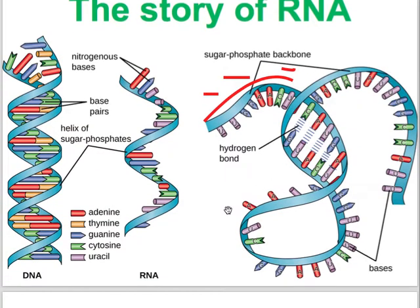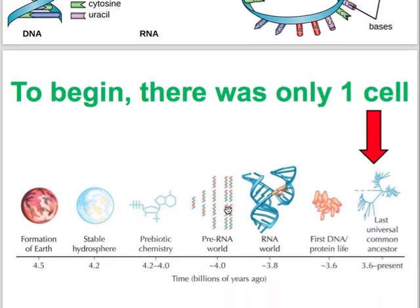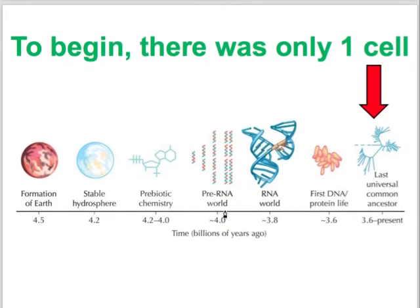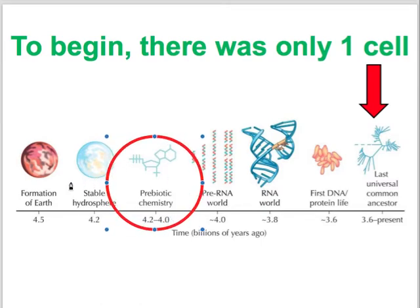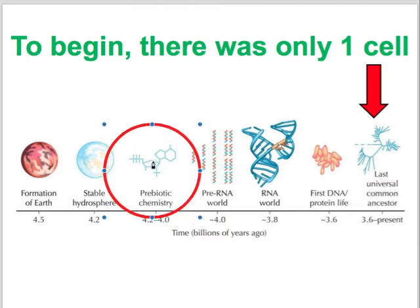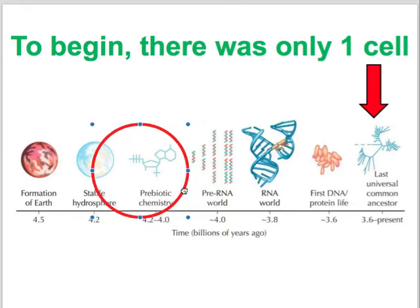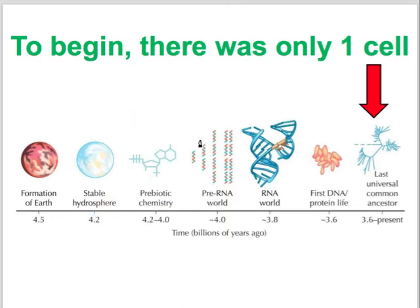We talked about the Stanley Miller hypothesis on the origin of life — essentially that under the conditions of early Earth, with a lot of heat, condensation, and electricity, nucleotides could form. Eventually these nucleotides were able to start binding to each other. Amino acids were also present, and that's where you start getting polymers.